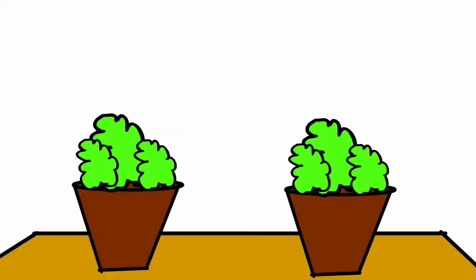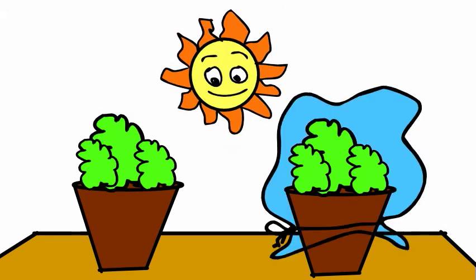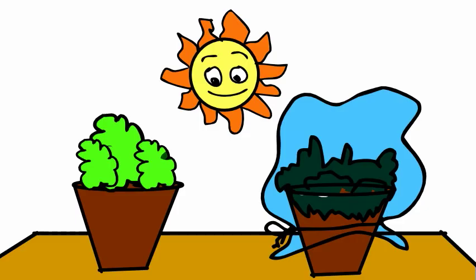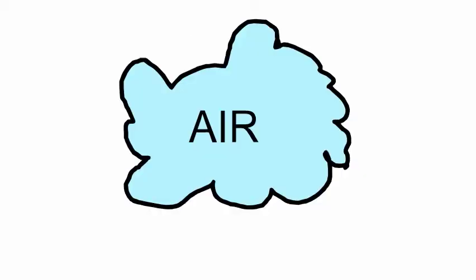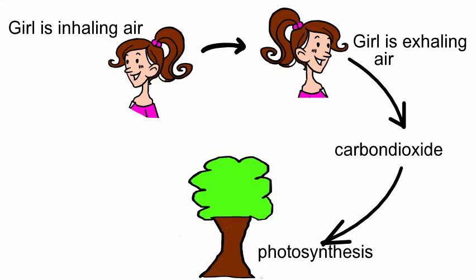Activity 2: Take two pots with plants, water both plants, and keep them in sunlight. Cover one of the plants with a transparent plastic sheet. Observe the plants for some days. The plant which is kept covered with the plastic sheet will shrink up and dry out. After some days, the other plant will remain healthy. Animals and human beings use oxygen present in the air and give out carbon dioxide gas. Plants consume carbon dioxide during photosynthesis and give out oxygen. In this way, a balance of carbon dioxide and oxygen is maintained in the air.